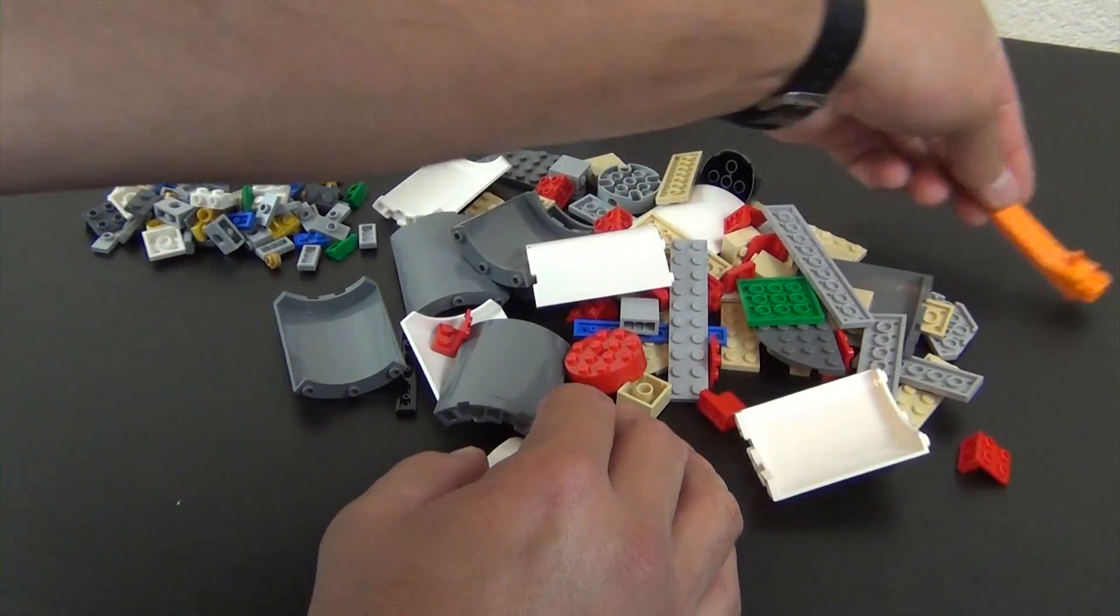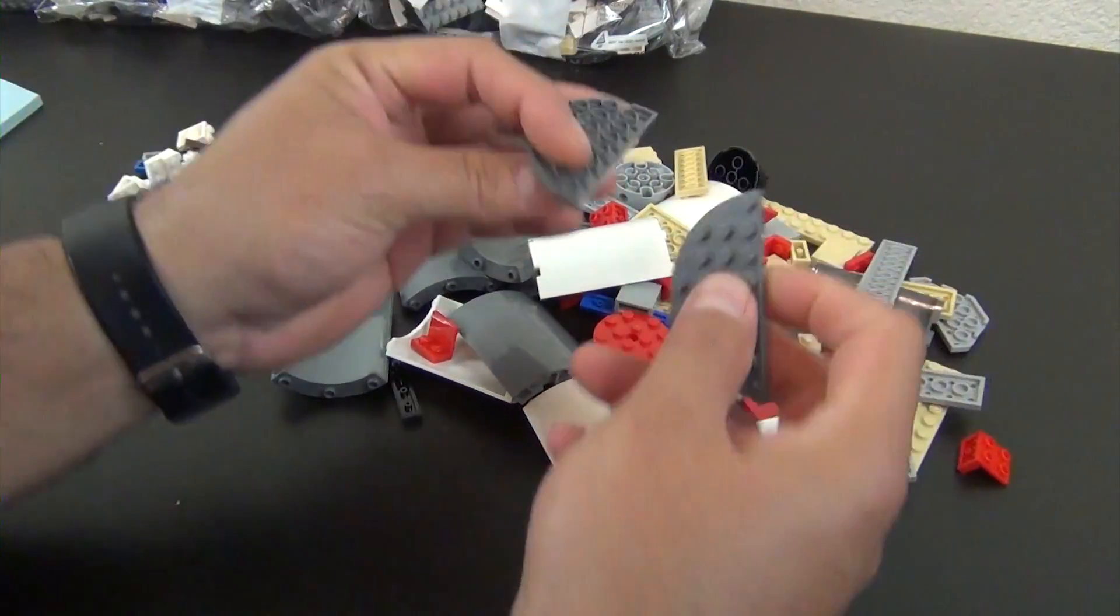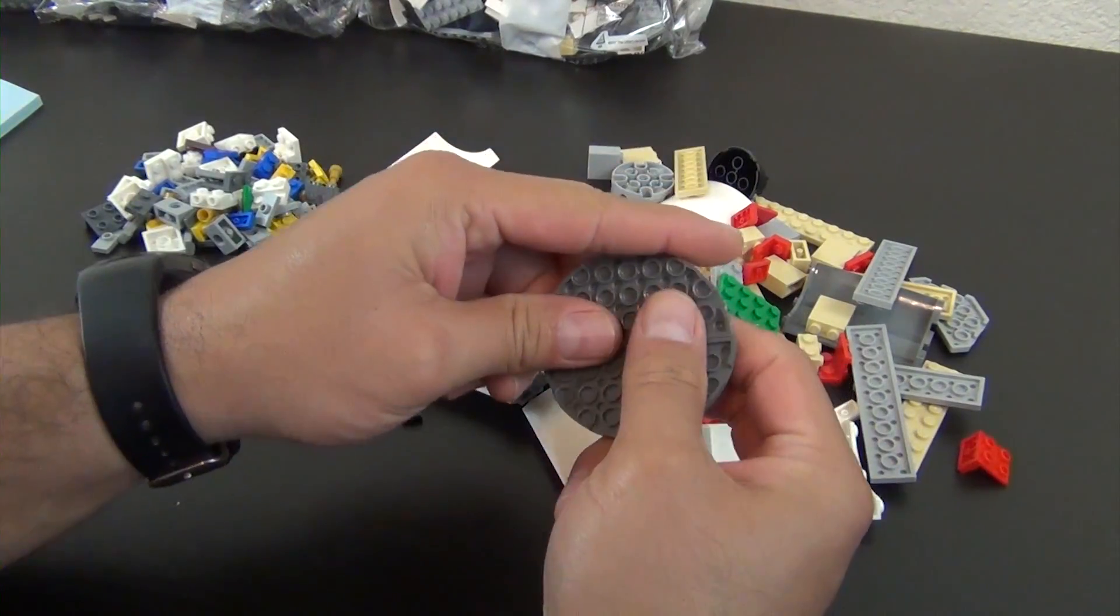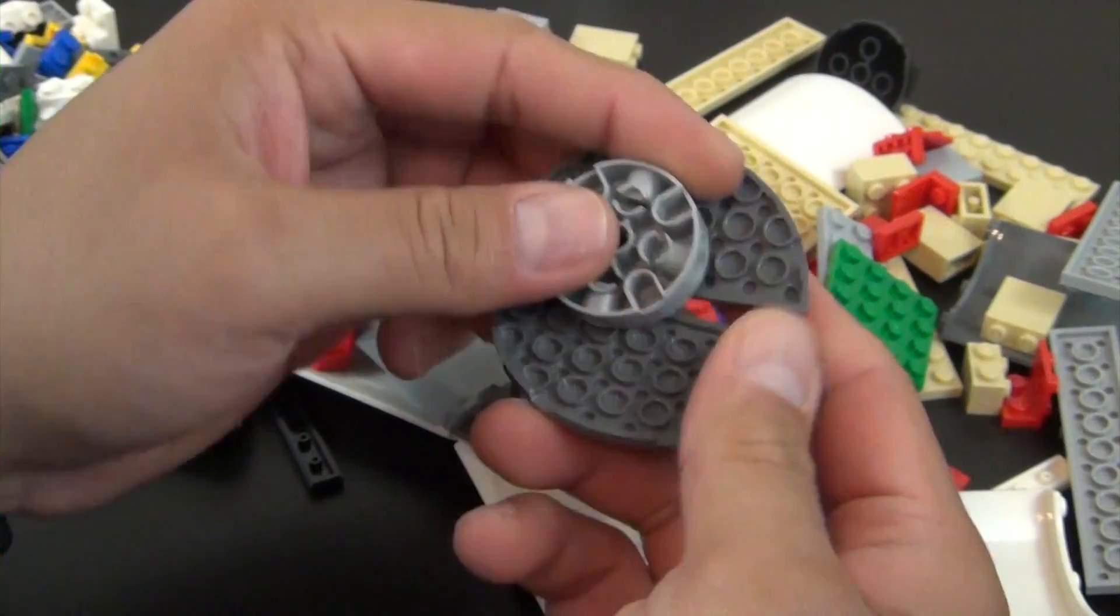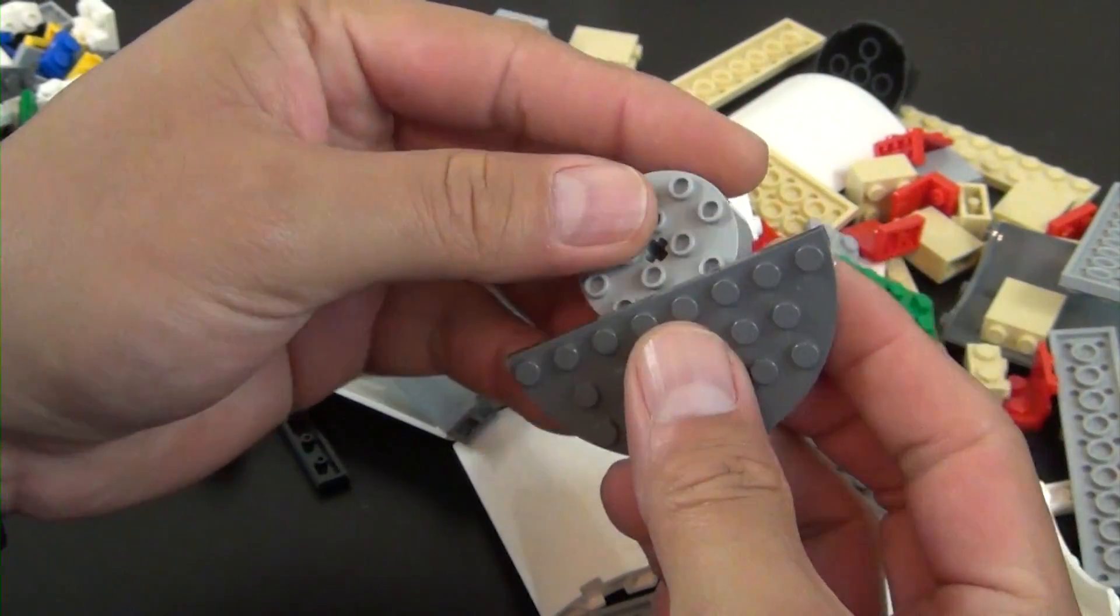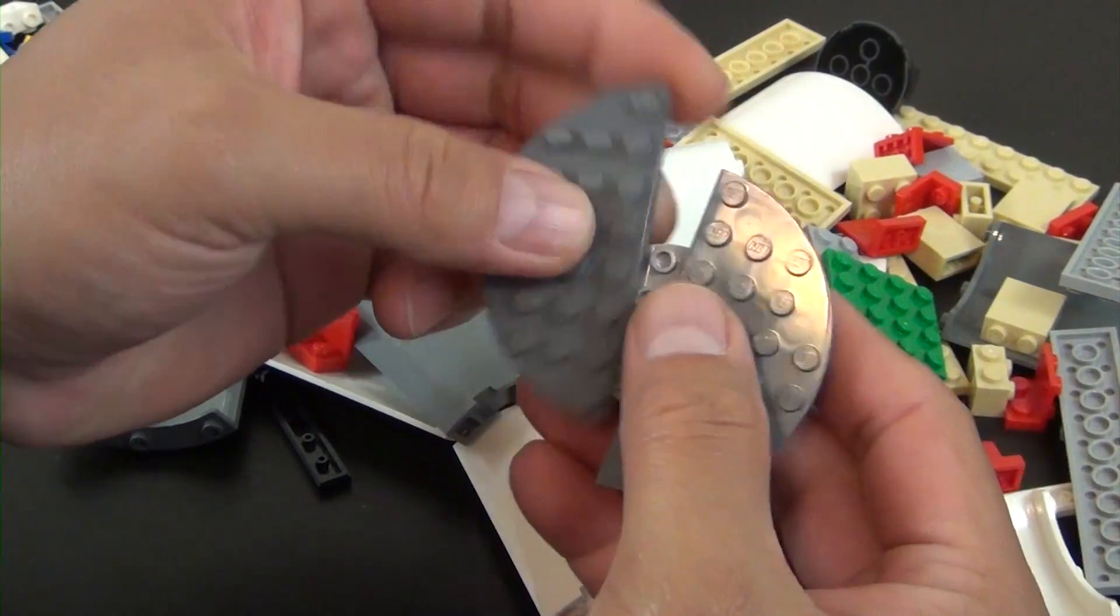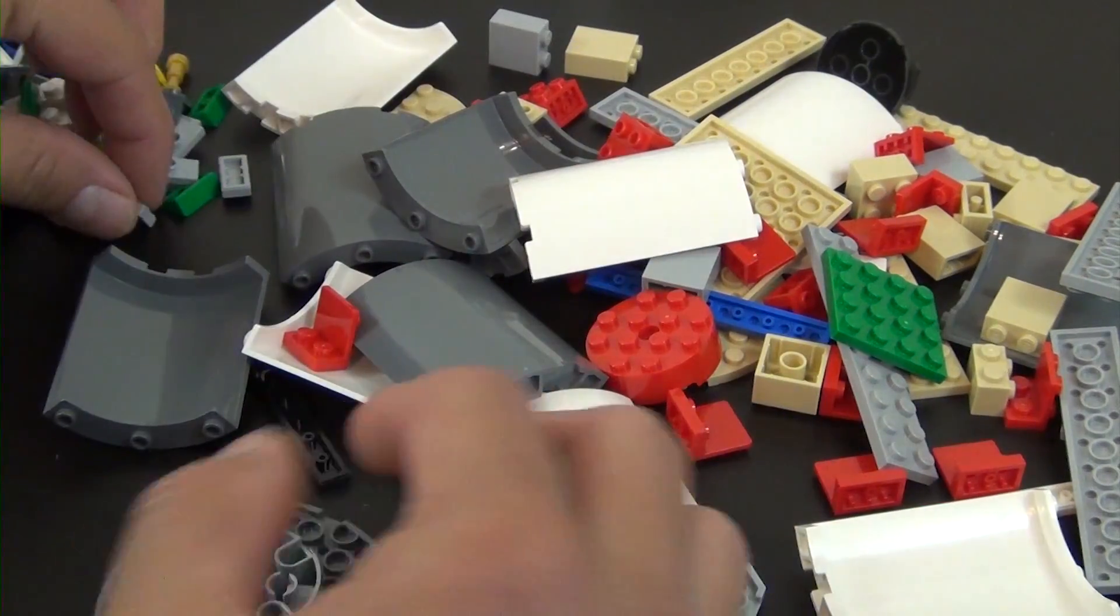So I'm going to move the brick separator out of the way, we don't need that yet. Hopefully I don't make any mistakes and we can easily build this. So we'll start with this round 4x4 brick with these half round plates on it.